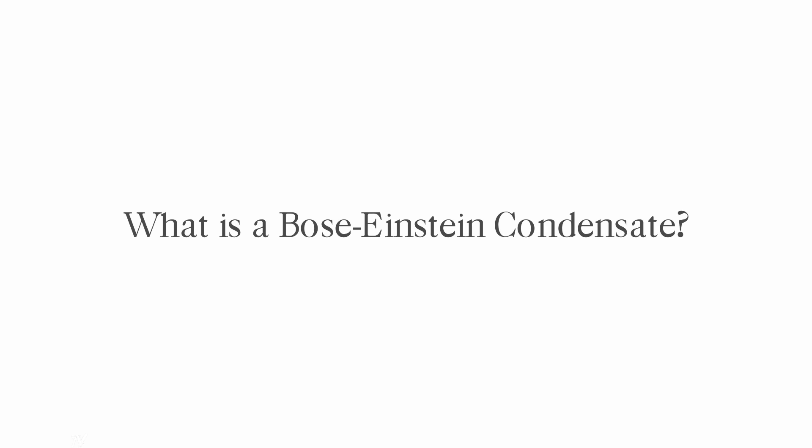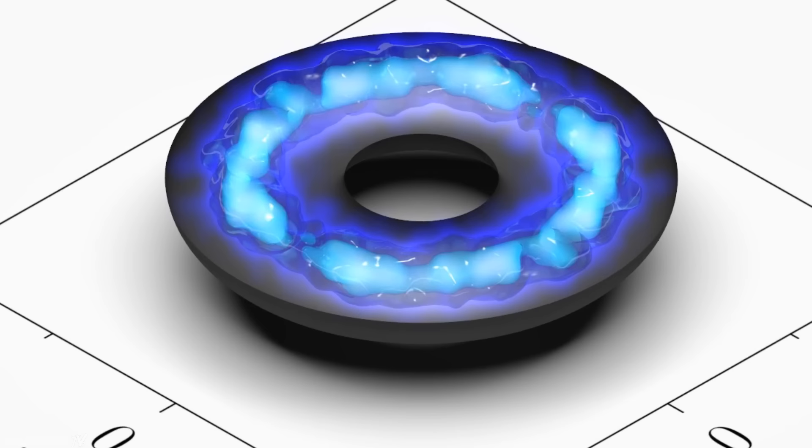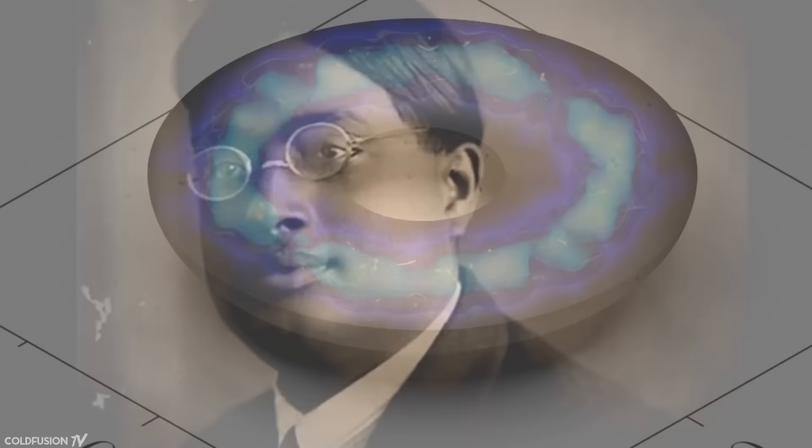So firstly, what is the Bose-Einstein condensate? A Bose-Einstein condensate, or BEC for short, is a new state of matter unobtainable in nature. It was first predicted by Indian physicist Satyendra Bose in 1925 and further developed by Einstein.